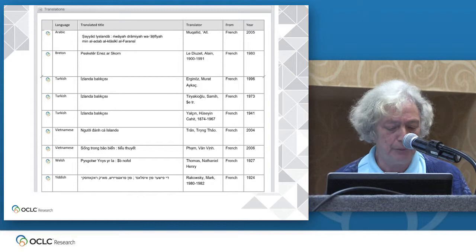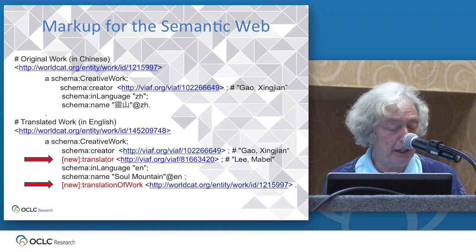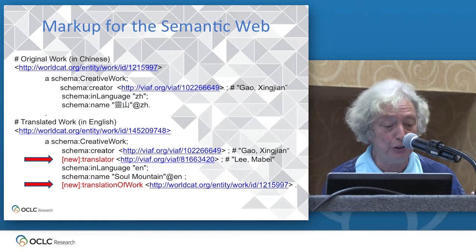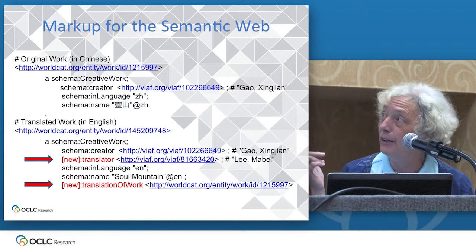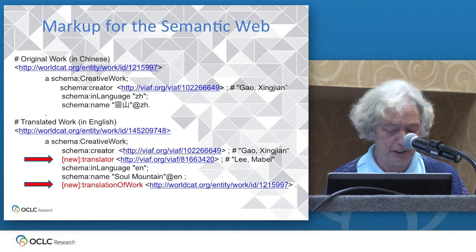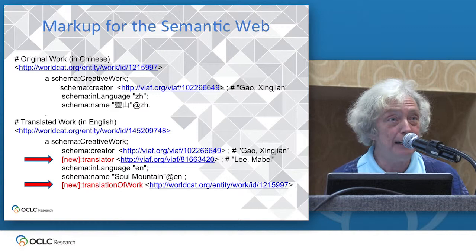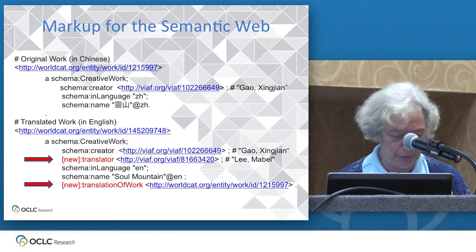Machines access VIAF far more often than humans. To leverage all the work done by the OCLC cooperative, we want to share the relationships we've established between original works and their associated translations with the semantic web. Here is a sample mark-up of an original Chinese work written by Gao Xingjian, a Chinese Nobel laureate for literature, and one of the translations of his works into English. We marked this up with schema.org, and there are two new terms we are proposing, shown here in red with arrows: 'translator' and 'translation of work.' Although I've been focusing on our work done in VIAF, the same process contributes to WorldCat work descriptions, the ones that were released earlier this year.